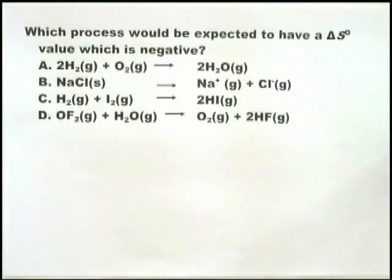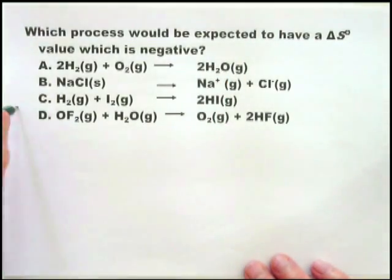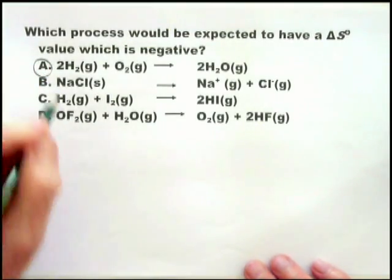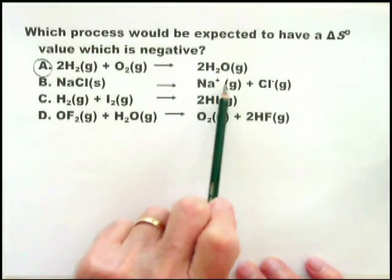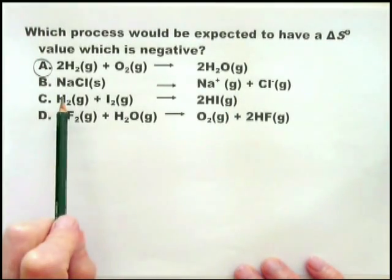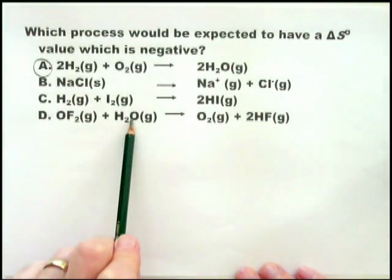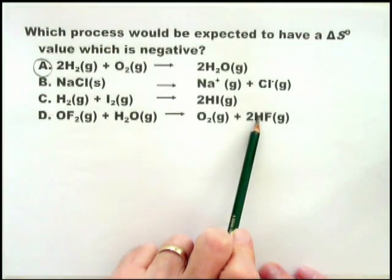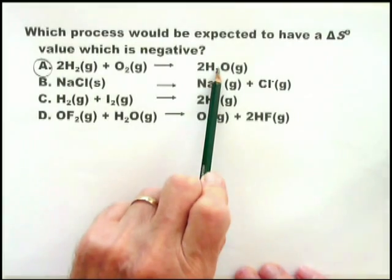The way this question is phrased, it implies there is only one equation with a negative value for entropy change. Immediately we see three molecules on the left and two molecules on the right — that must be it, it has a negative value for entropy change. Let's check the others: sodium chloride converting to gases — positive change in entropy. Two molecules of gas to two molecules of gas — zero change in entropy. Two molecules to three molecules — positive. Therefore the only negative one is going from three molecules on the left to two molecules on the right of gas.